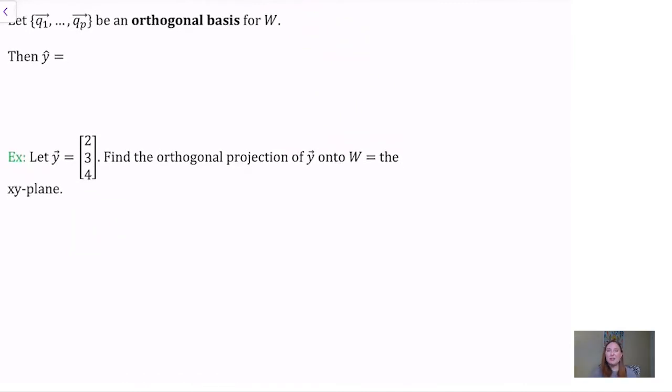We begin with an orthogonal basis for our subspace. So a set of vectors that is not only a basis, but each of the vectors in the set are orthogonal. Then our orthogonal projection onto w, y hat, is given by y dot q1 over q1 dot q1 times q1,